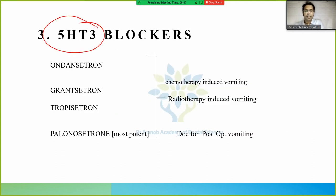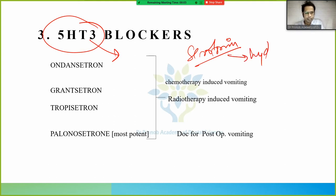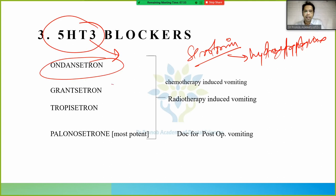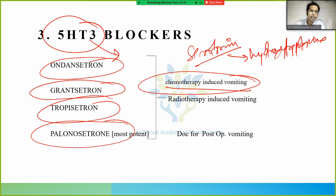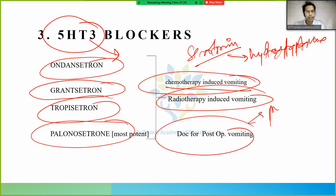5HT3 antagonists — also known as serotonin (5-hydroxytryptamine) antagonists — include ondansetron, granisetron, tropisetron, and palonosetron. These are used for chemotherapy-induced vomiting. When chemotherapy is given, vomiting occurs, and 5HT3 blockers are used to treat it.